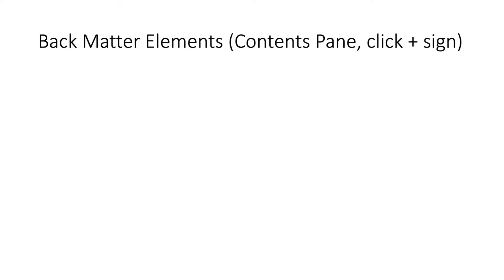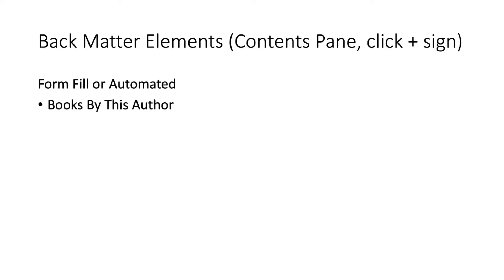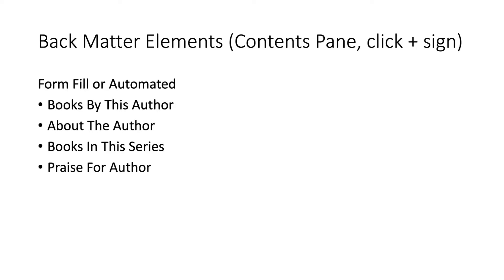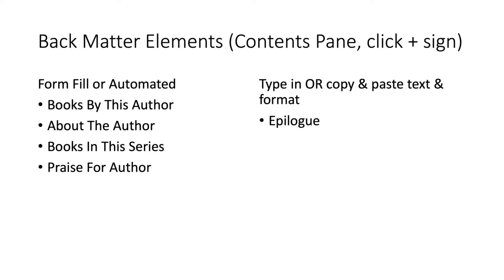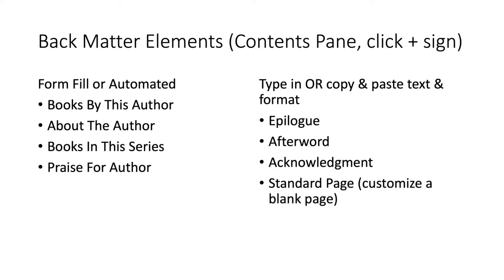The back matter performs very similarly to the front matter elements. There are form fill or automated options: Books by This Author, About the Author, Books in This Series, and Praise for the Author — you just type in the text and it formats the page automatically. There are also more custom pages where you can type or paste directly, including Epilogue, Afterword, Acknowledgements, and a standard page for any other special resource you want at the back of your book.